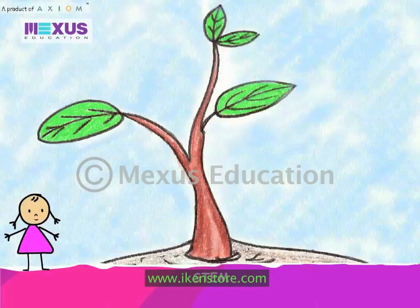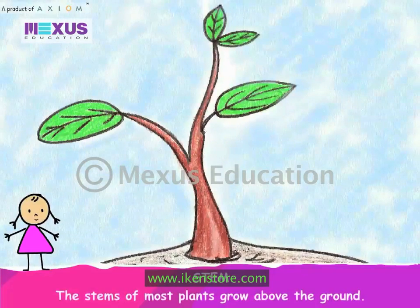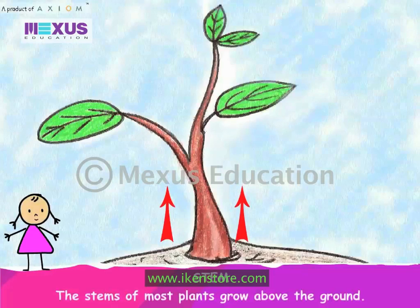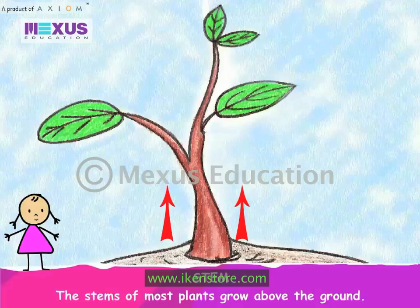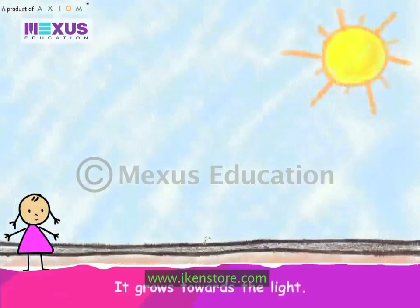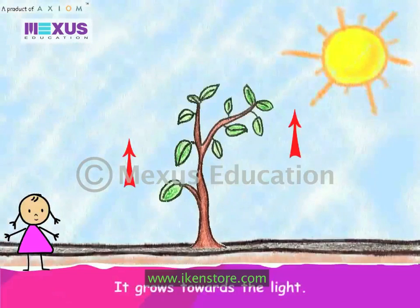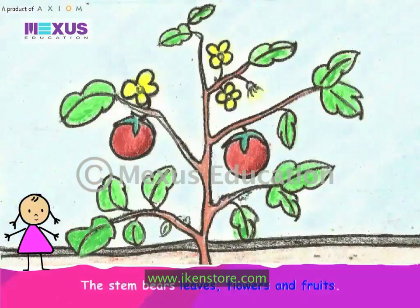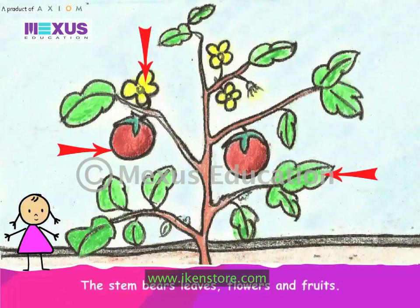Stem. The stems of most plants grow above the ground. It grows towards the light. The stem bears leaves, flowers and fruits.